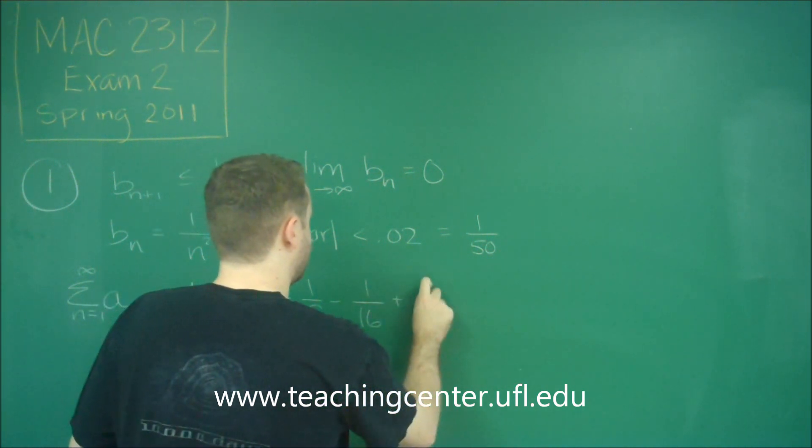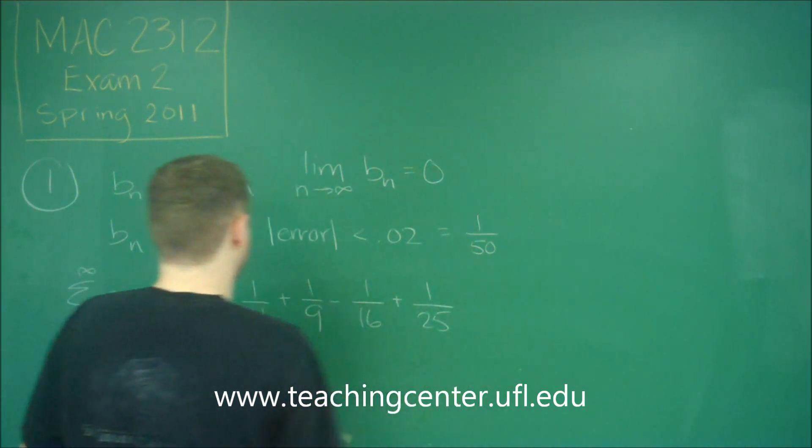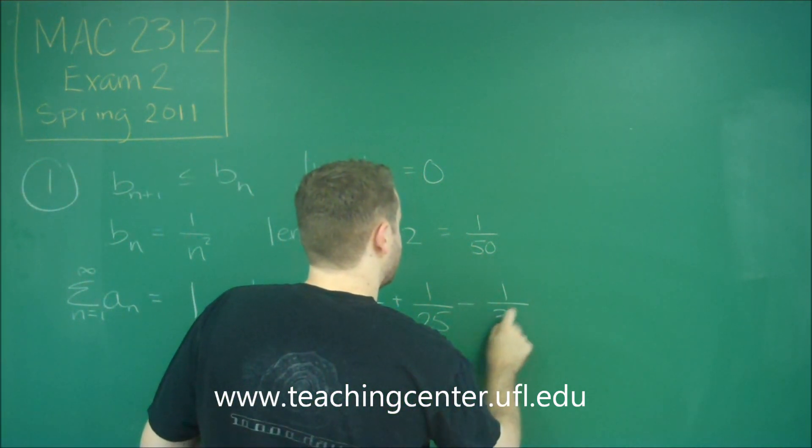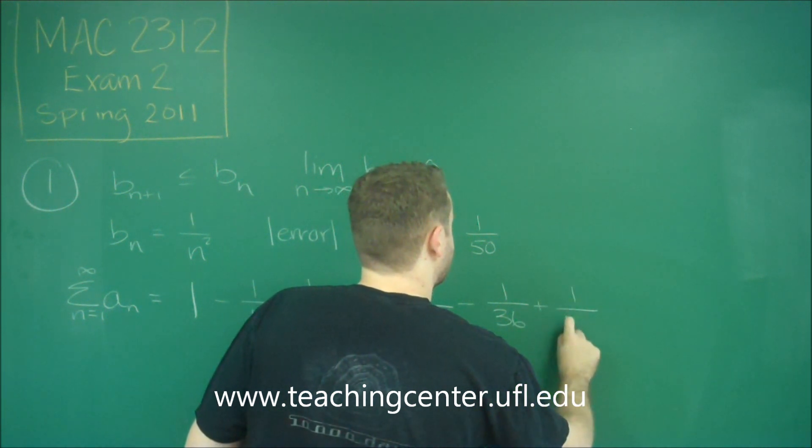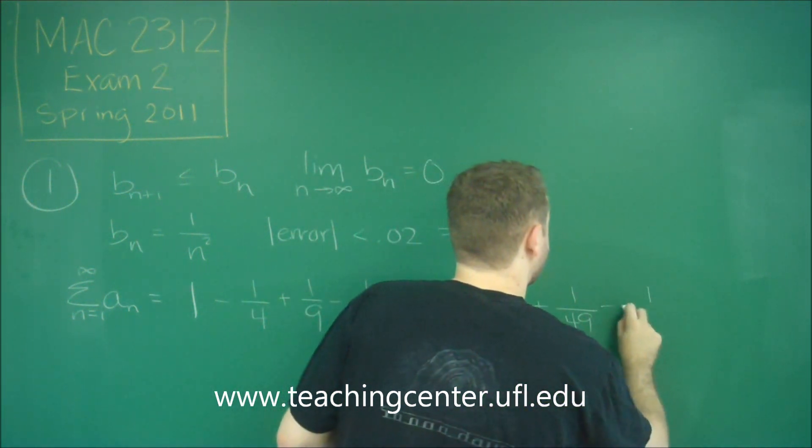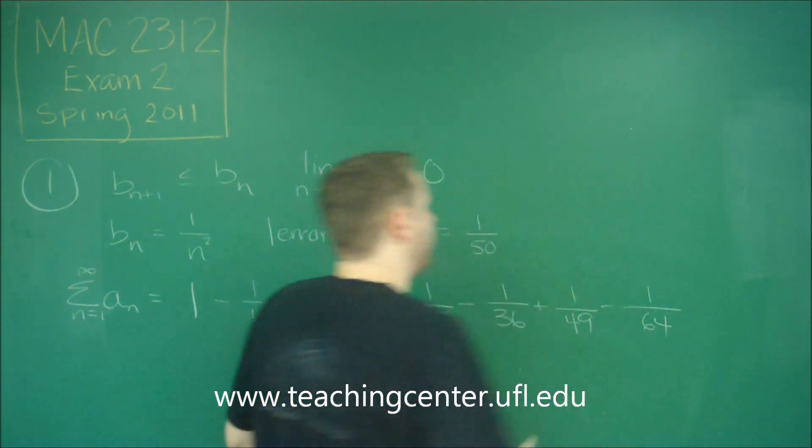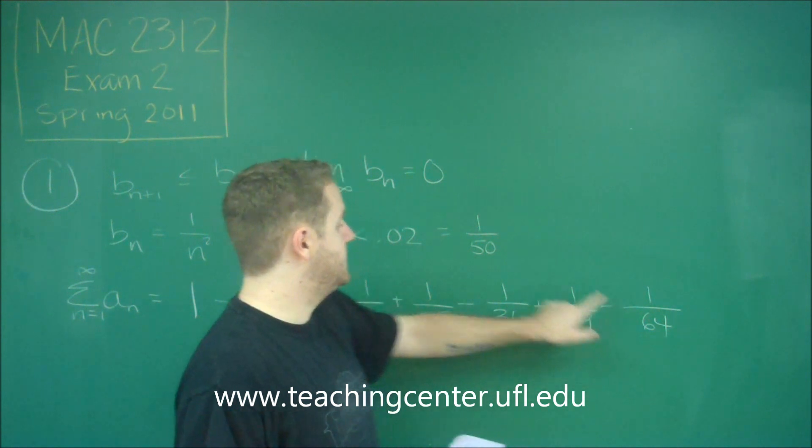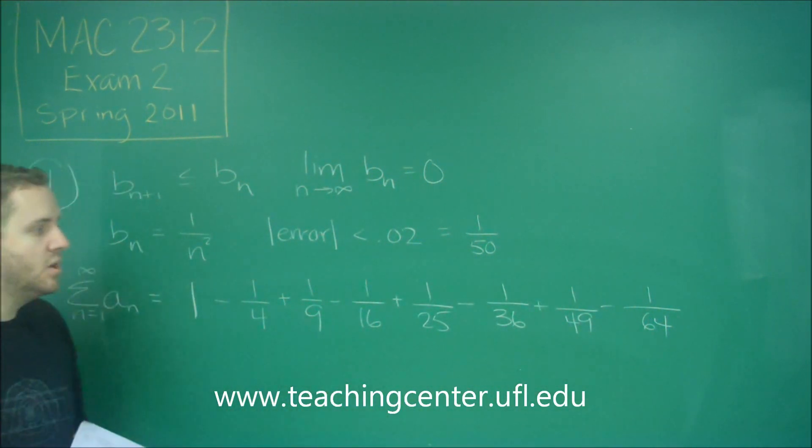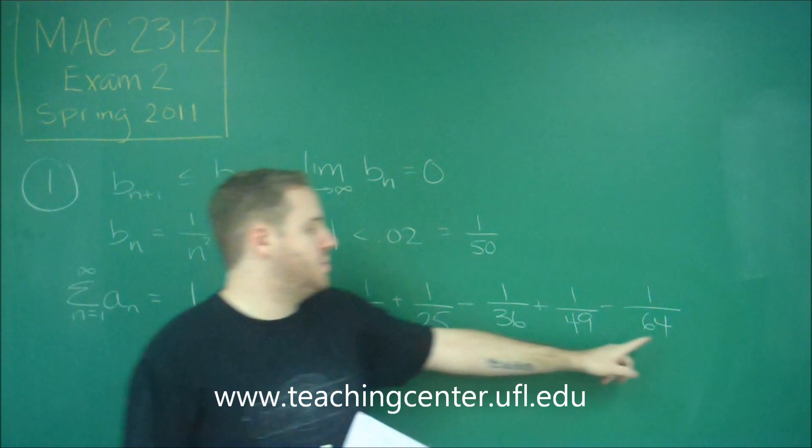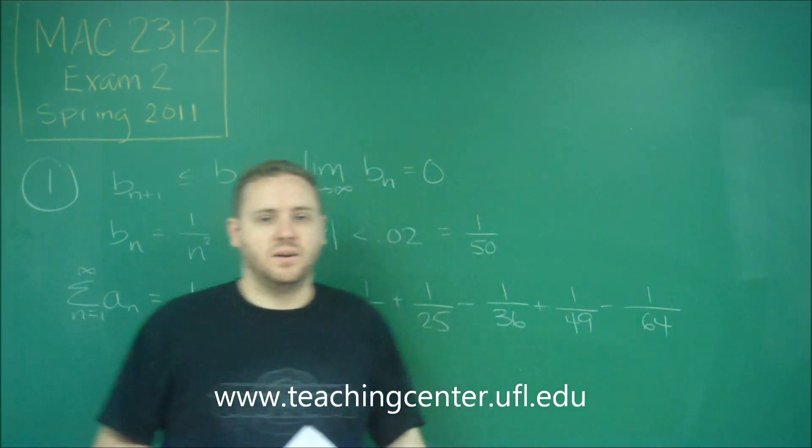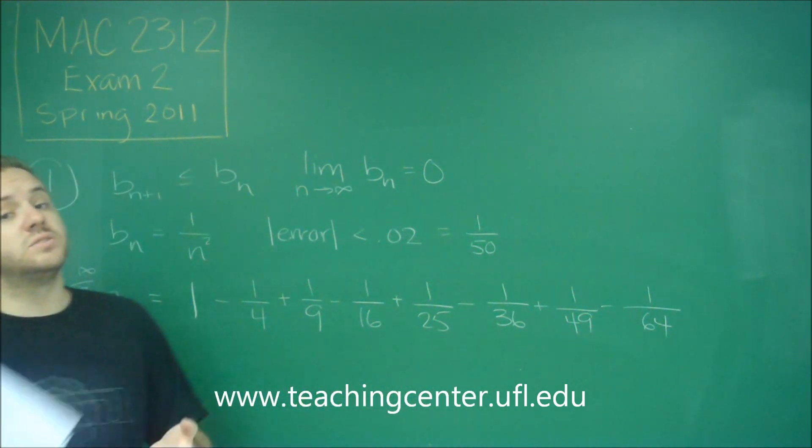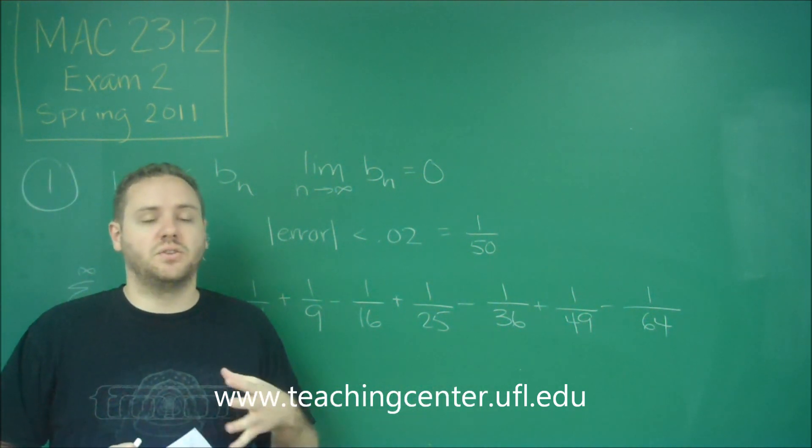So minus 1/16th plus 1/25th—you can see we have 2 squared, 3 squared, 4 squared, 5 squared. Here we have 6 squared. Here we have 7 squared. And finally, once we get to 8, this is now less than that. You can see the further terms would be alternating 9 squared, 10 squared, etc. Those are all going to be so much smaller than everything else, plus they're going to alternate and cancel each other out even further.